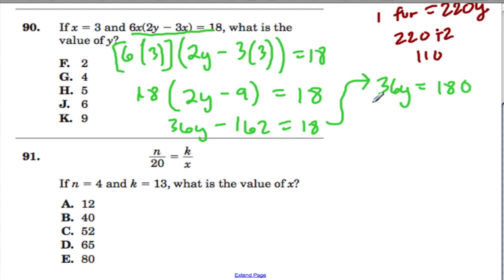Now we're going to divide both sides by 36. 36 times 5 is 180, so that means 180 divided by 36 is also 5. And y is going to be 5.